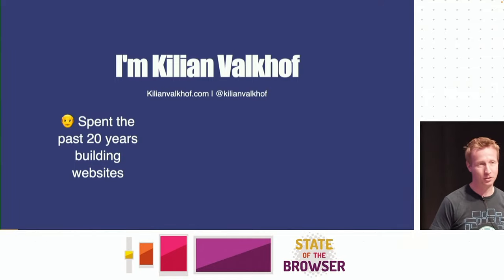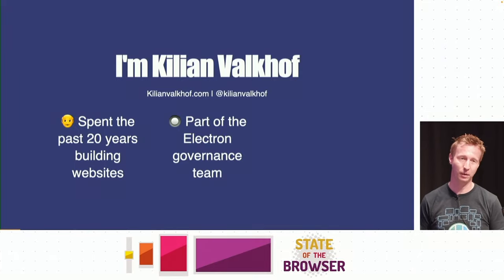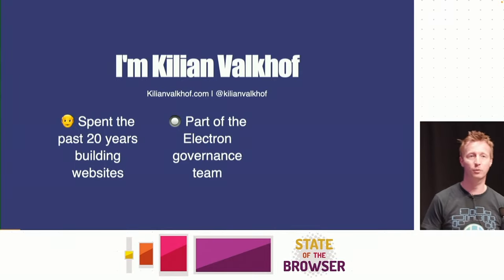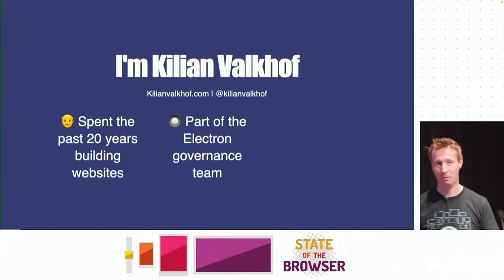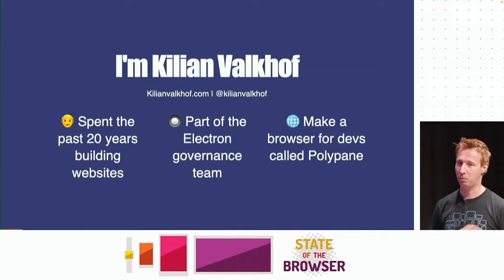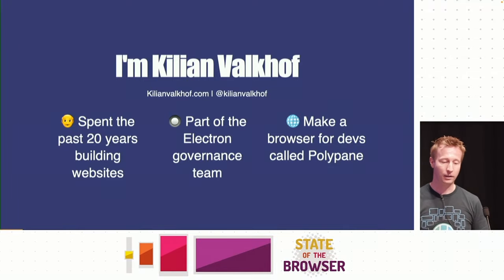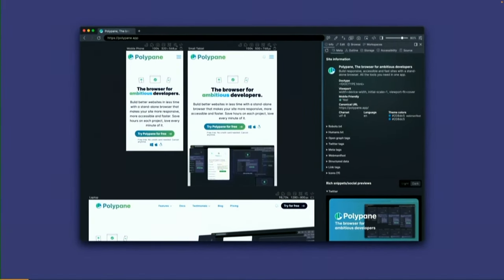Who am I? I'm Kilian. I spent the past 20 years building websites in all manner of technologies. I am part of the Electron governance team — if you're unfamiliar, Electron is a framework to make desktop applications using web technologies. It basically takes Chromium and Node and meshes them together. I built Polypane in it, which is a browser for developers.